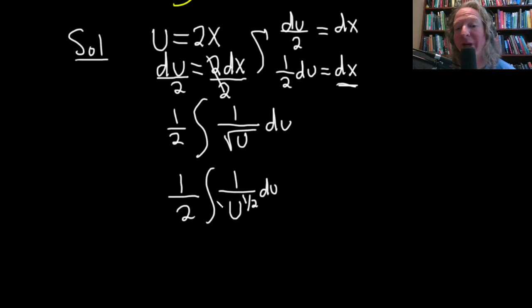And then you can take this and bring it upstairs. So it'll be 1 half integral u to the negative 1 half du. Just bringing it upstairs makes the exponent negative when you do that.